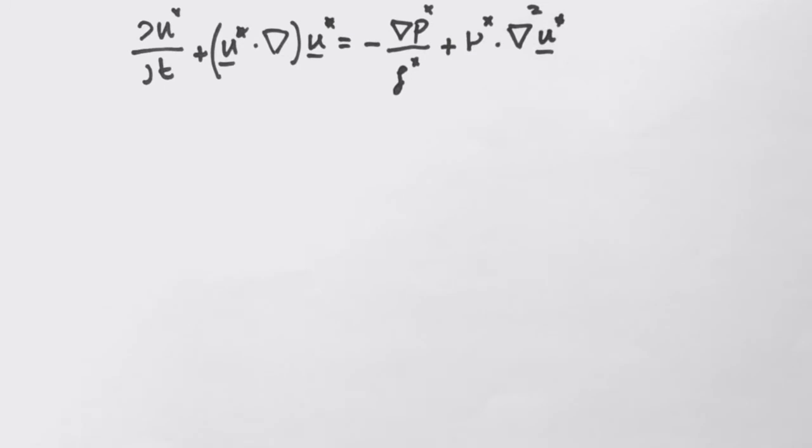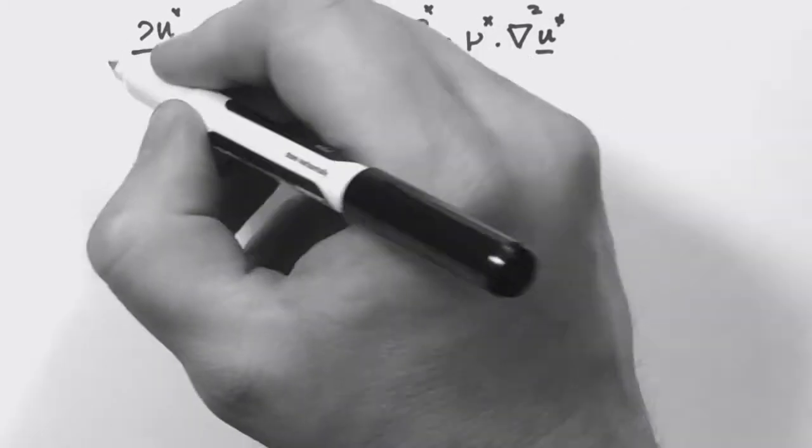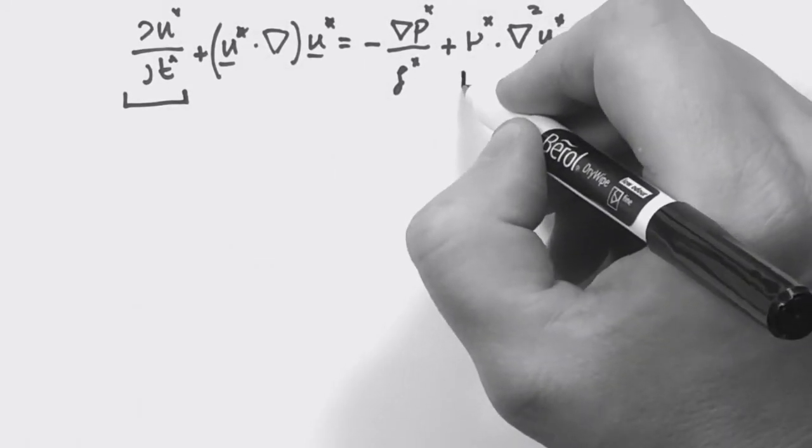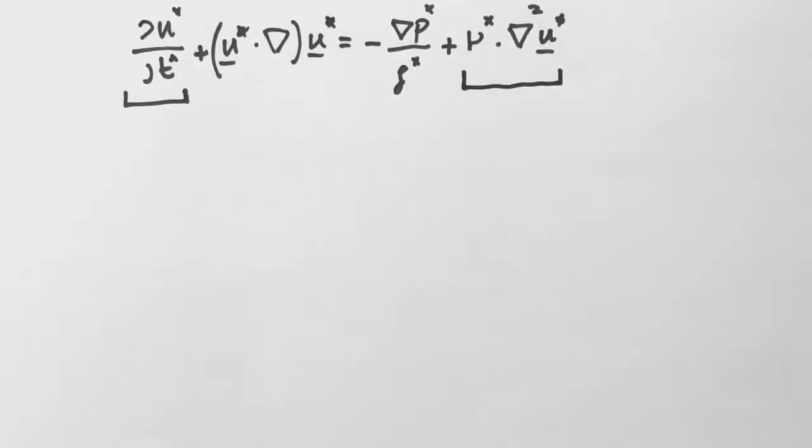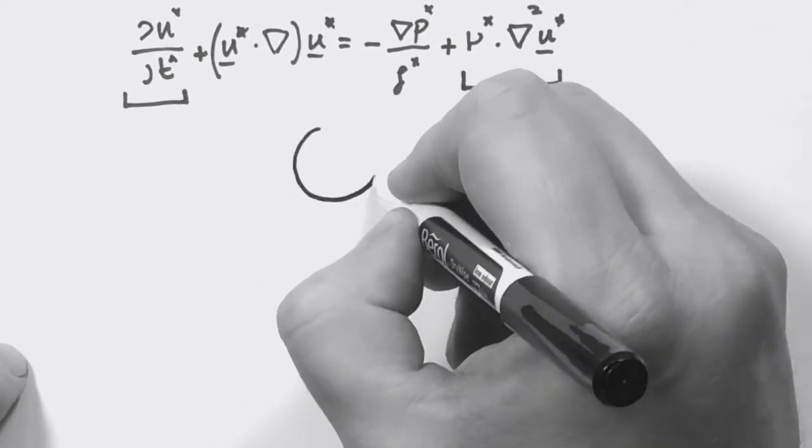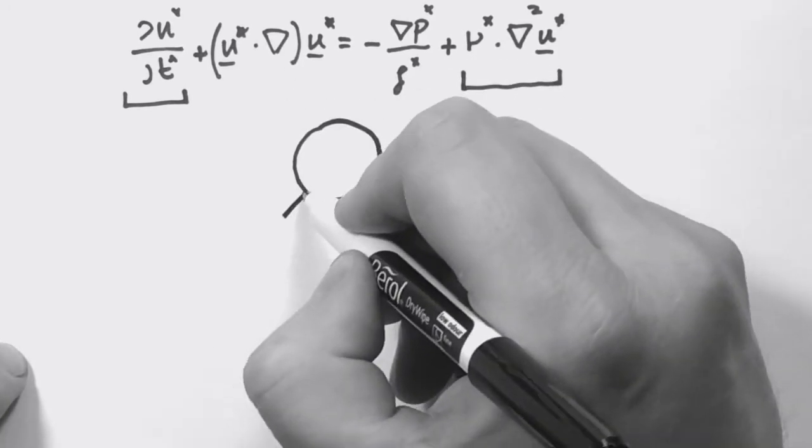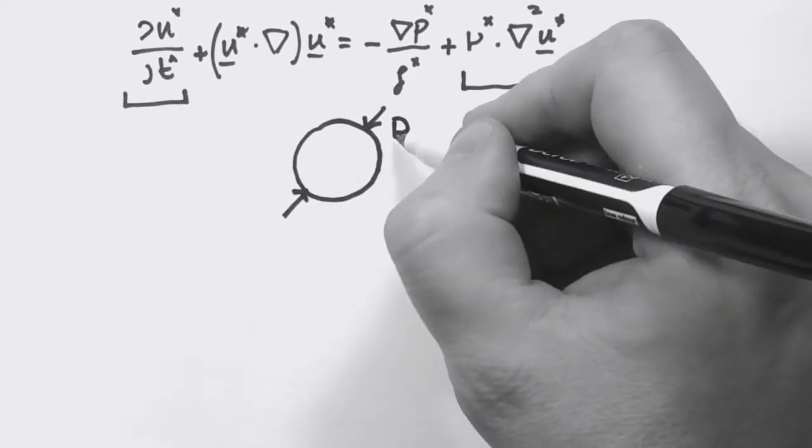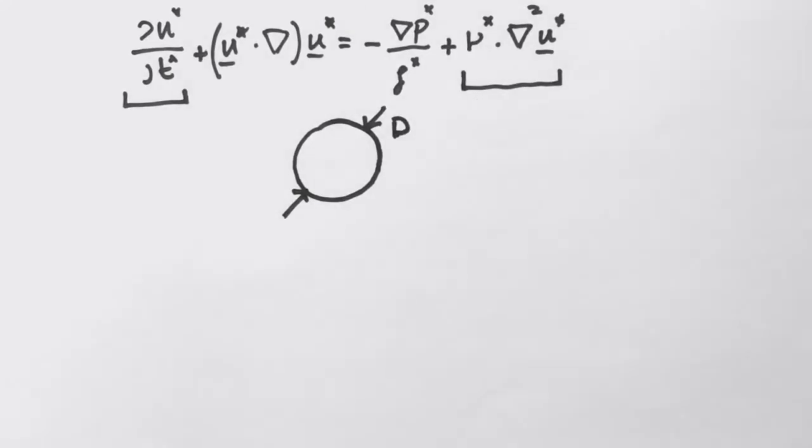To explore the scaling, all we have to do is compare this unsteady term, for example, with the viscous term. For simplicity, consider the flow over a sphere or a cylinder.